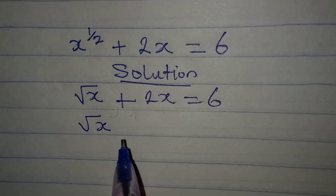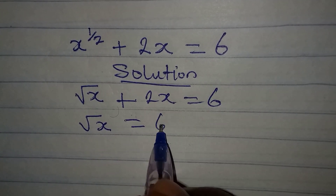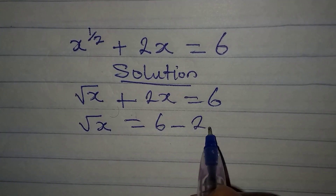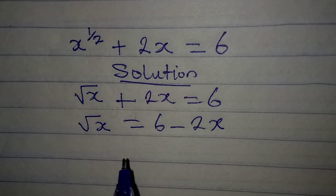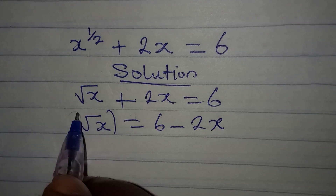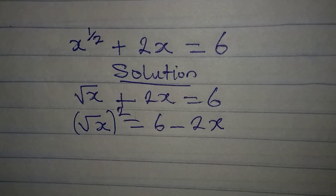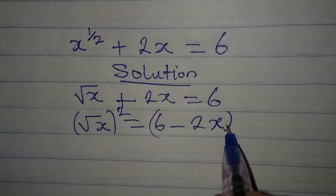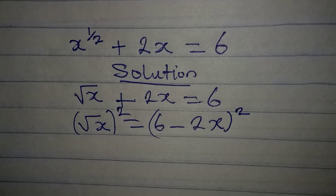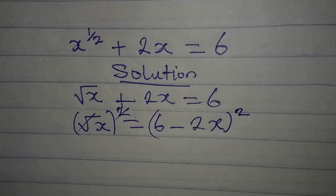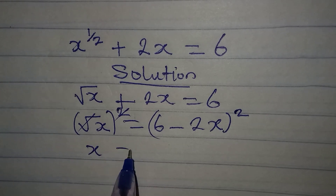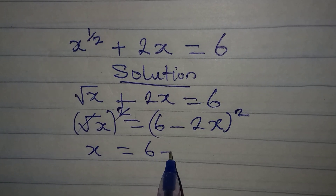If I collect like terms, square root of x should be equal to 6 minus 2x. The next step is to square both sides — squaring the left side and squaring the right side — so that x will be equal to (6 minus 2x) squared.